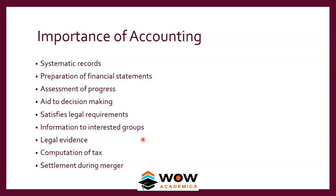In terms of mergers, when two companies come together they first check that accounts are proper before combining to create a new company. For example, Procter would have been a different company and Gamble a different company, and they combined to create Procter & Gamble. There are many such companies which have combined together. These are the key reasons for the importance of having accounts.